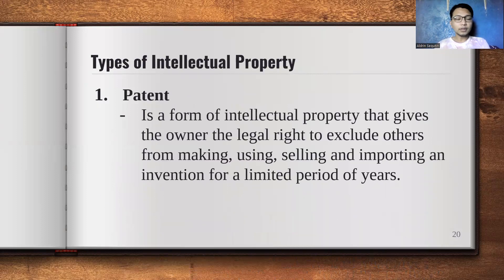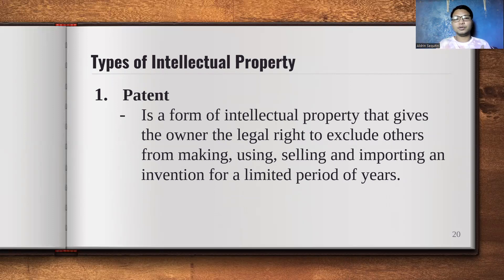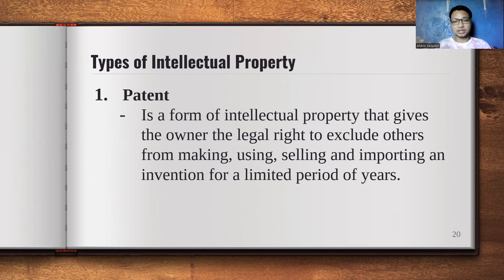The first type is patent — a form of intellectual property that gives the owner the legal right to exclude others from making, using, selling, and importing an invention for a limited period of years. For example, if you are the inventor of a specific product, you own the patent and can exclude others from copying or using it. The rights to that product exclusively belong to you.